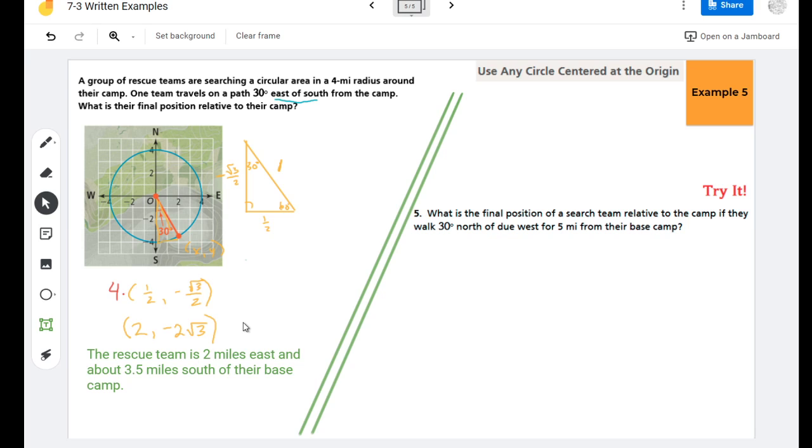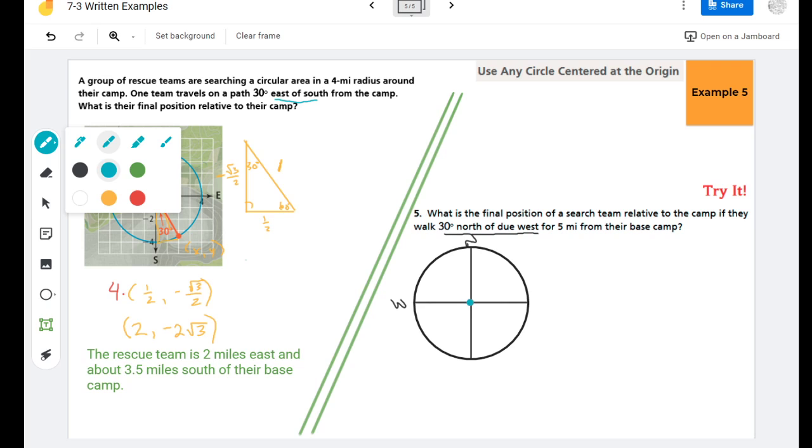Alright, so we're going to try that again but now they're going to go in a different direction. So here's my roughly sketched unit circle. It says they're 30 degrees north of due west. So here's west, here's north, so if they're 30 degrees north of due west, that would be 30 degrees here. We need to find that x, y and again multiply it by five now because they're saying this radius is five.